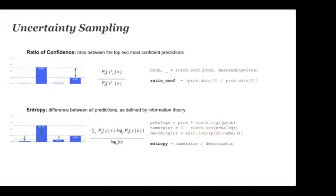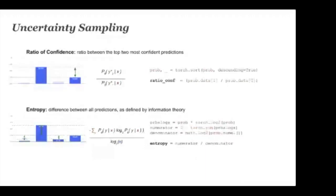The fourth heuristic is entropy, which looks at the difference across all label predictions. The null result of all labels being exactly 25% in a four-class case produces maximum entropy, again normalized so that a score of one represents maximum uncertainty.